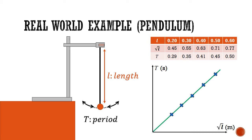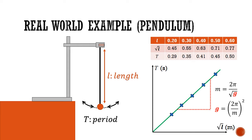By finding the gradient of this line, m, this will equal 2π over the square root of g. Then we can find the value of gravitational acceleration g by using the formula 2π over the measured gradient m, and squaring the whole thing. This is a standard practical experiment using linear law to determine an unknown constant, which in this case is the gravitational acceleration of the earth.